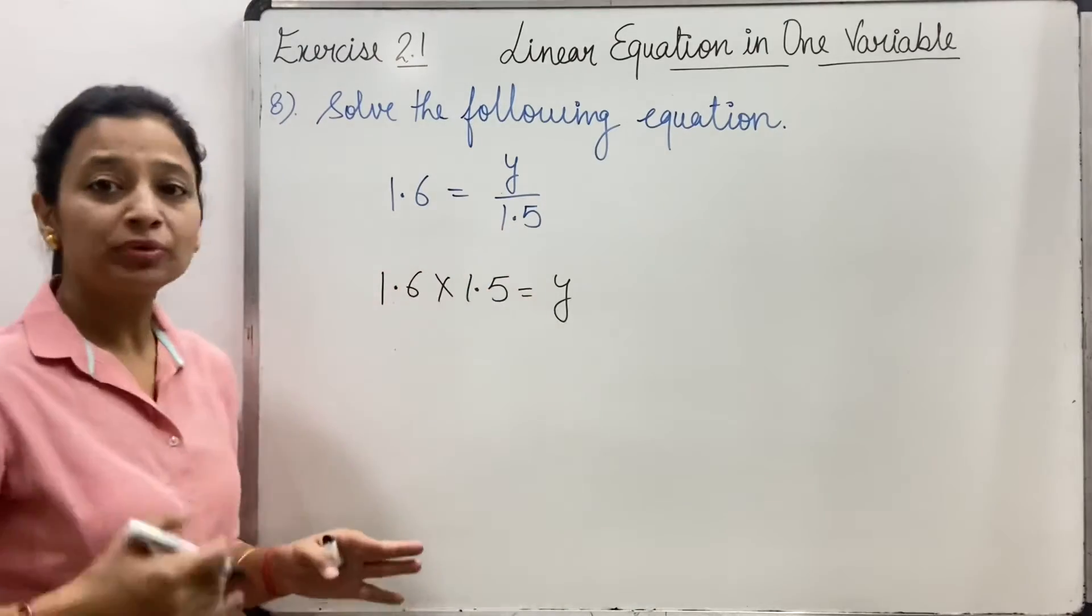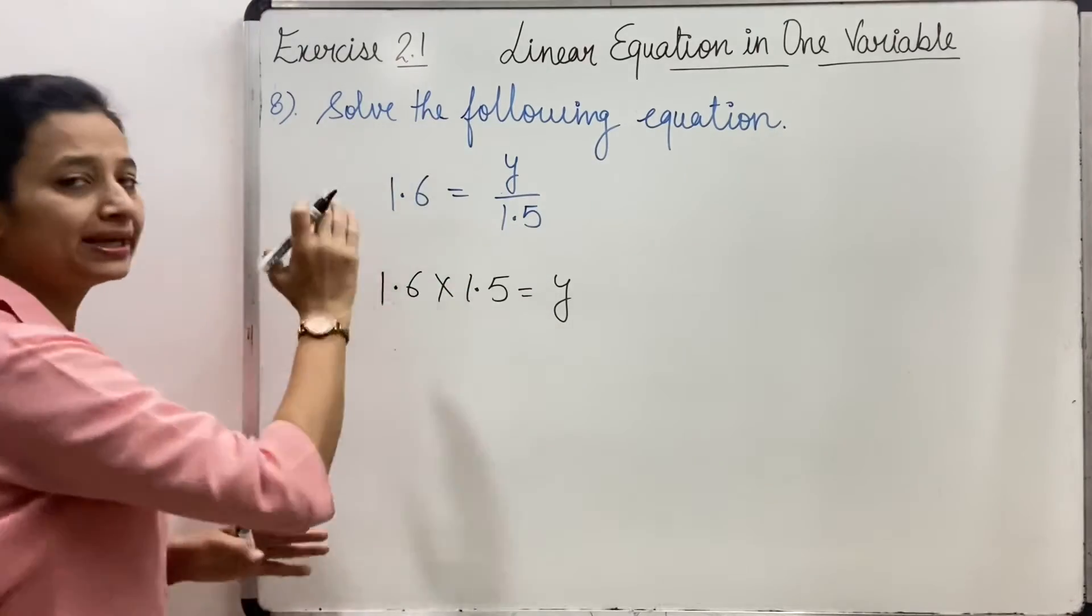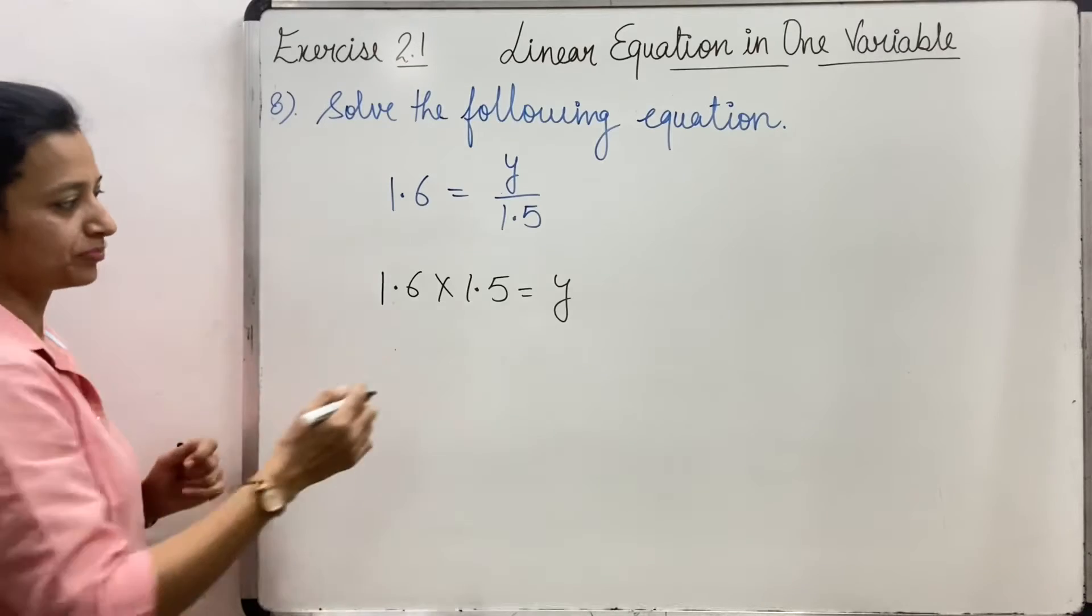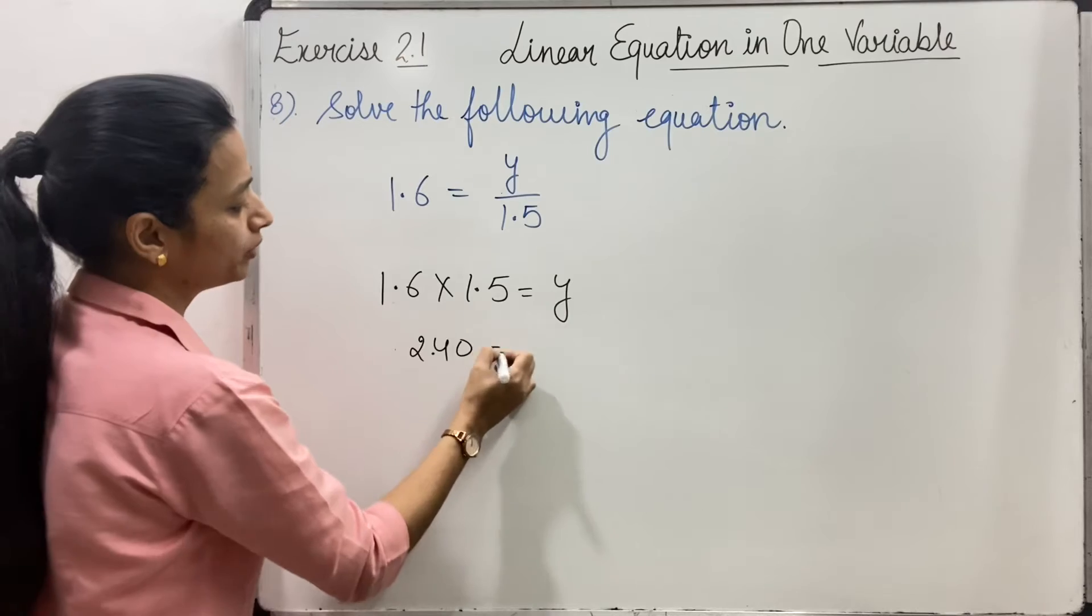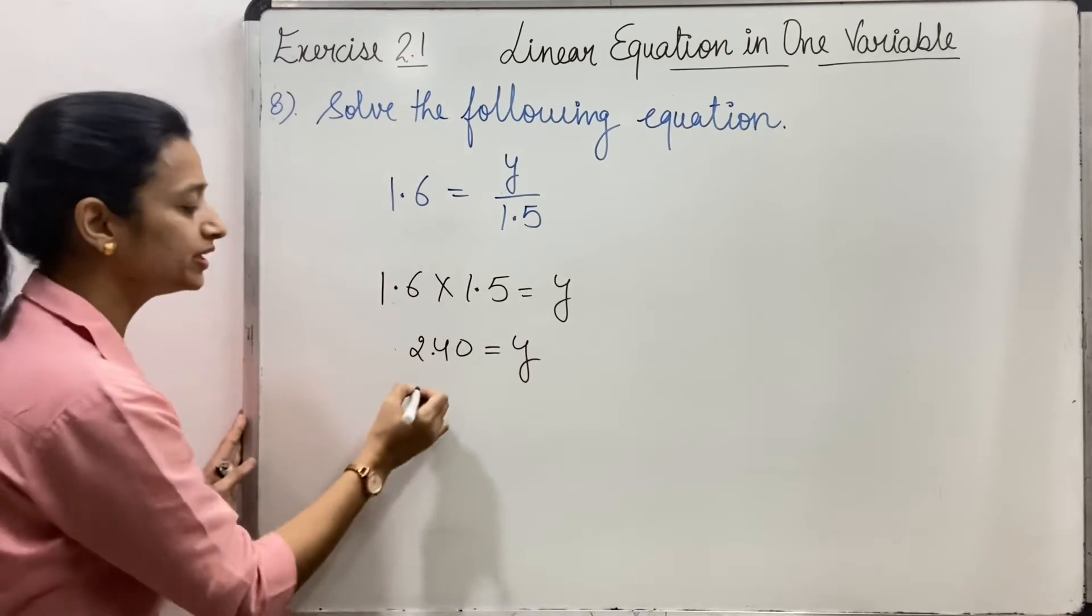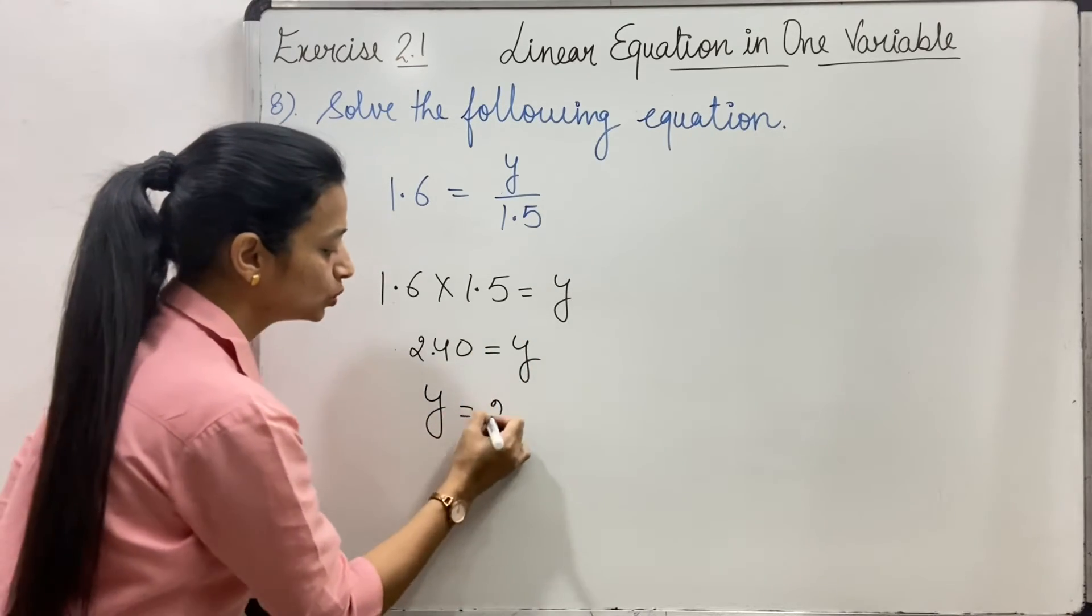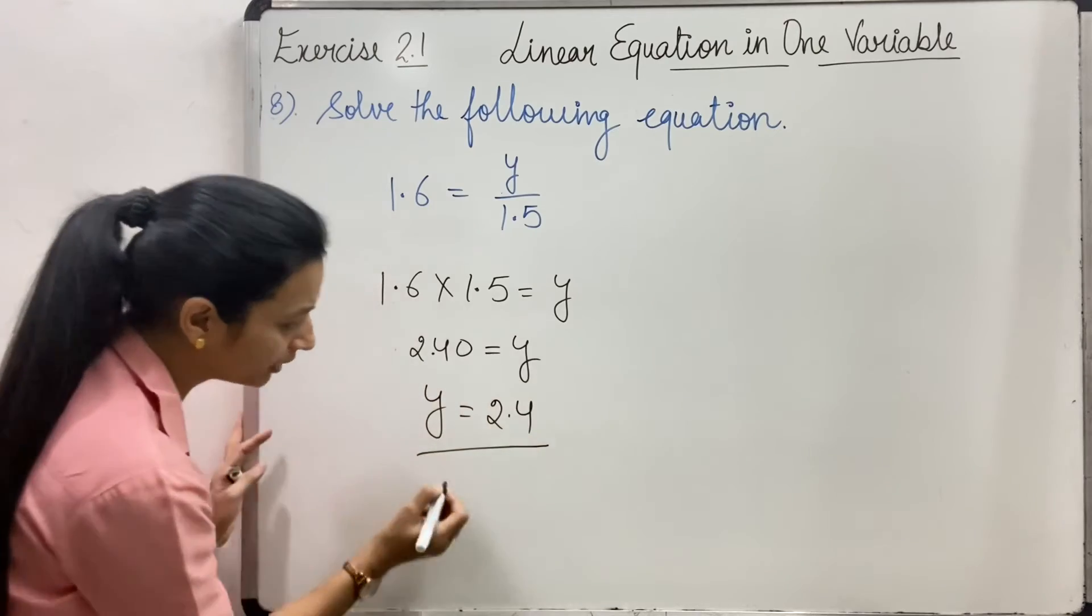Kyunki yahan par kaise tha 1.5 divided ne to idhar aayega to kya hojayega multiply. To dono ko multiply karenge to kya hojayega 2.4 equals to y or we can write it like y equals to 2.4 okay.